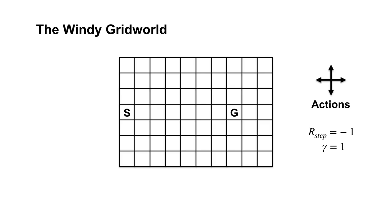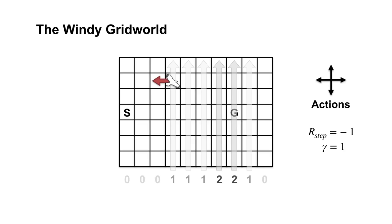Here's where the twist comes in. A wind blows the agent upwards when moving out of certain states. The wind strength in each state depends on the column. For example, if the agent is in a column with wind strength one and takes the action left, it will move left and then up one cell.